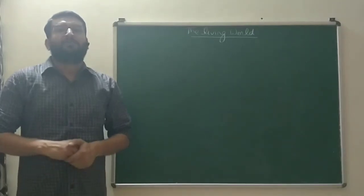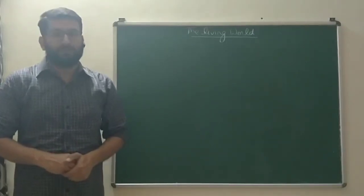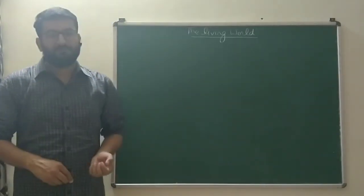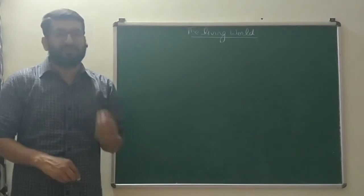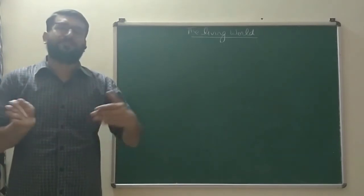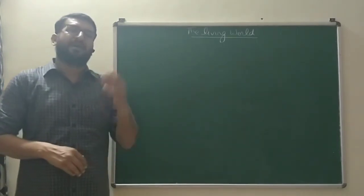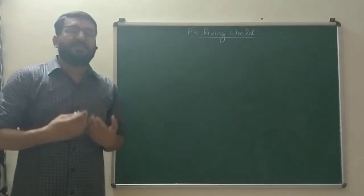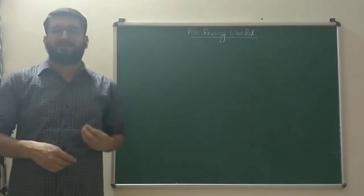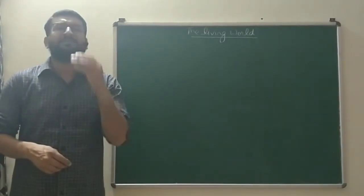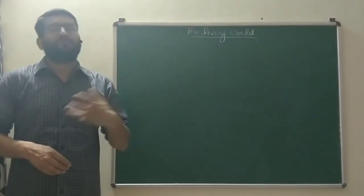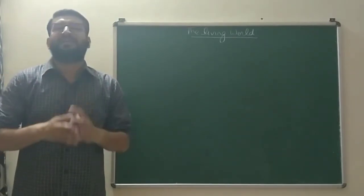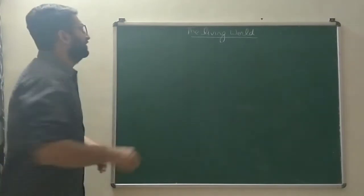Hello children, we are discussing Chapter 1, The Living World. In this chapter, we have covered what is life, the difference between living and non-living, and the characteristics of their differentiation. After that, we discussed various taxonomical terms like taxonomy, systematics, classification, and identification. Then we covered binomial nomenclature and its rules, and now we are discussing the taxonomical aids.